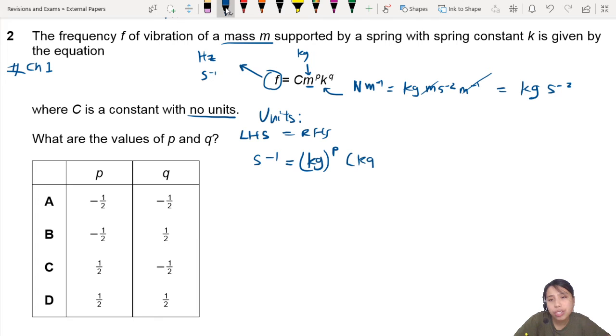k is kgs⁻² to the power of q. Now we have to find out what is p, what is q. Let's look through this step by step. On the left-hand side, there's no kg. Let's simplify this a bit. So 1 over s equals kg^p, kg^q, divide by - actually let's put this whole thing down here - s⁻²q. I'm just multiplying the indices in.